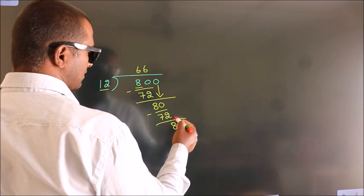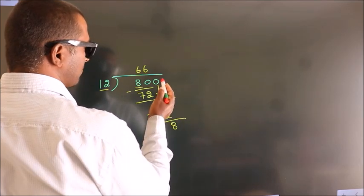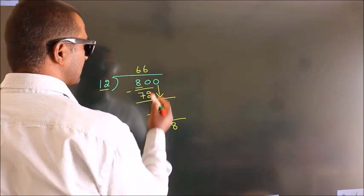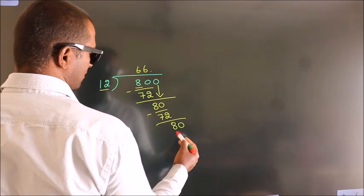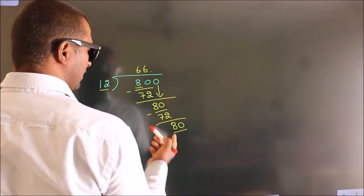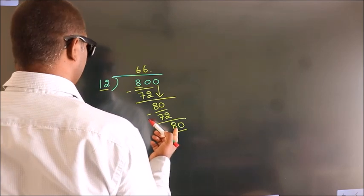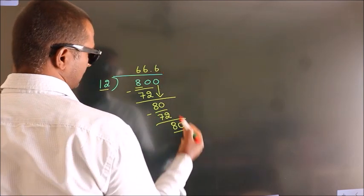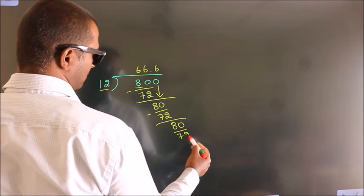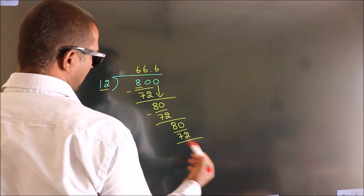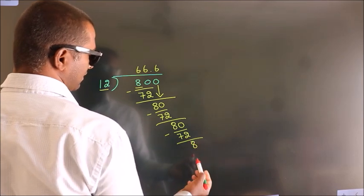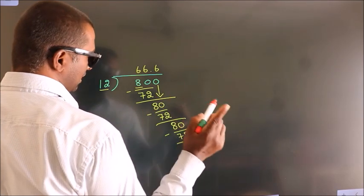After this, no more numbers to bring it down. So what we do is we put dot, take 0. So 80. A number close to 80 in 12 table is 12, 6, 72. Now we subtract. We get 8. Now you observe.